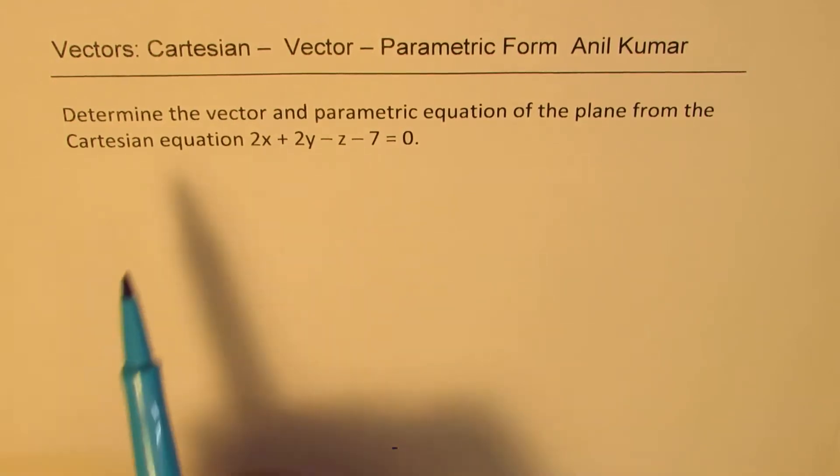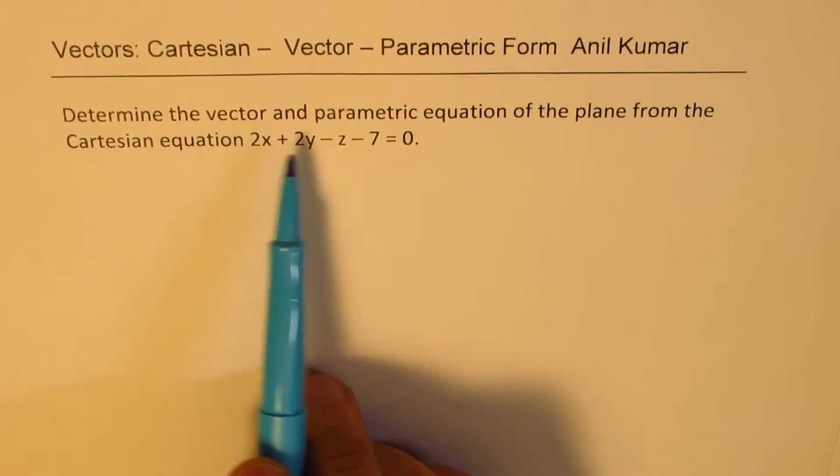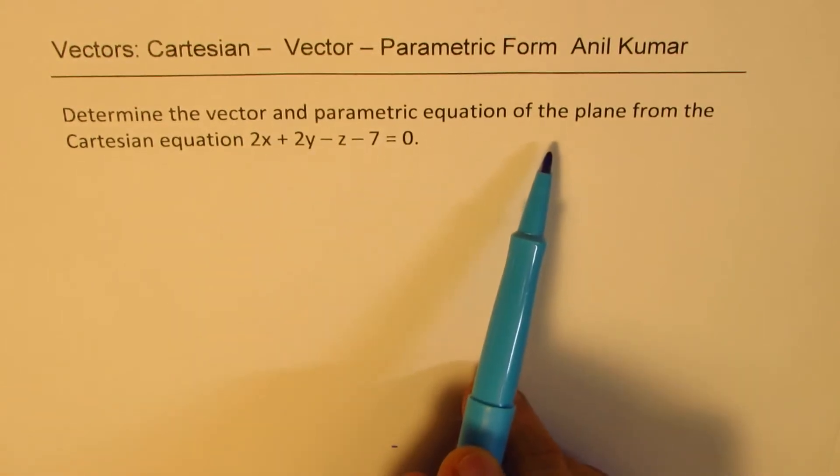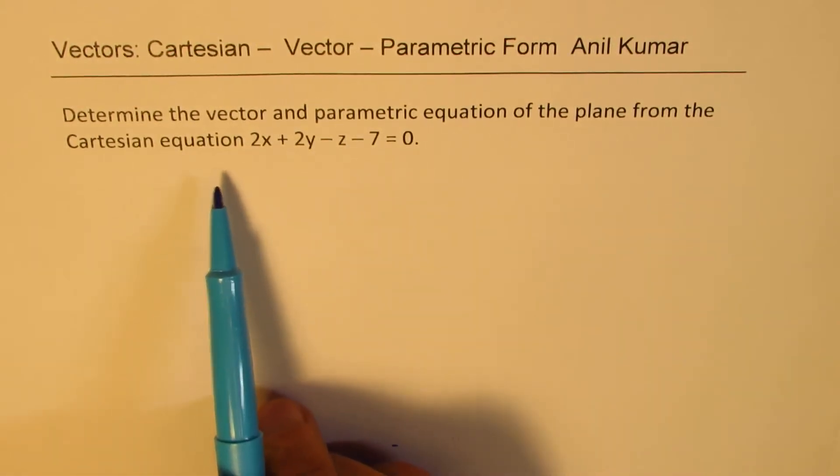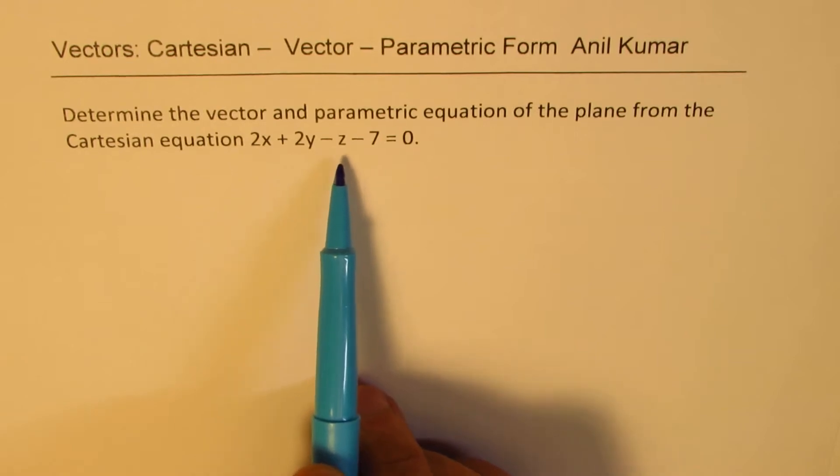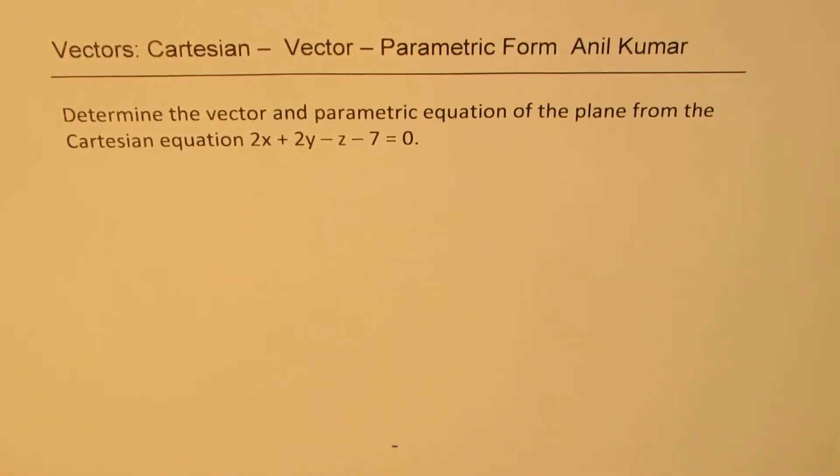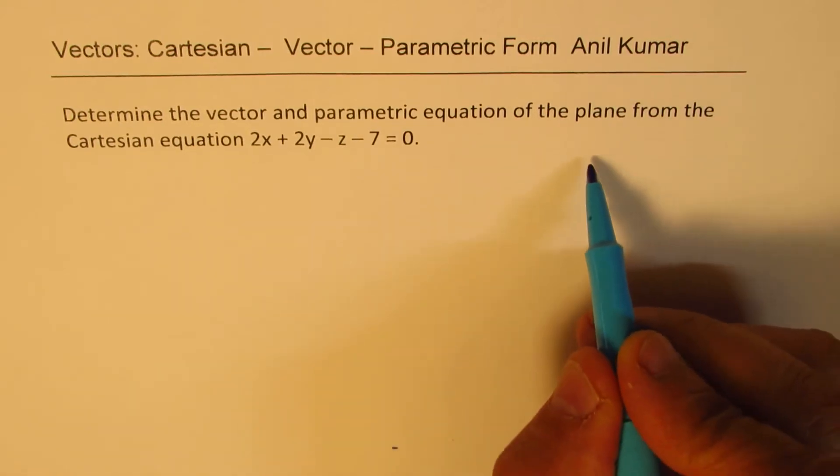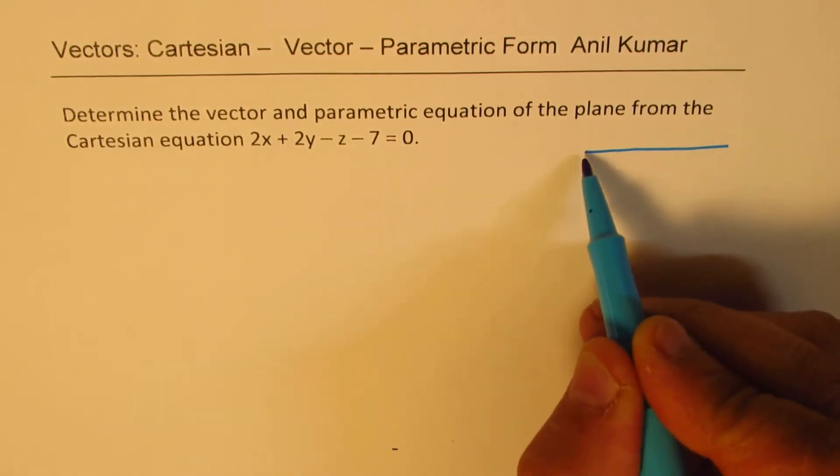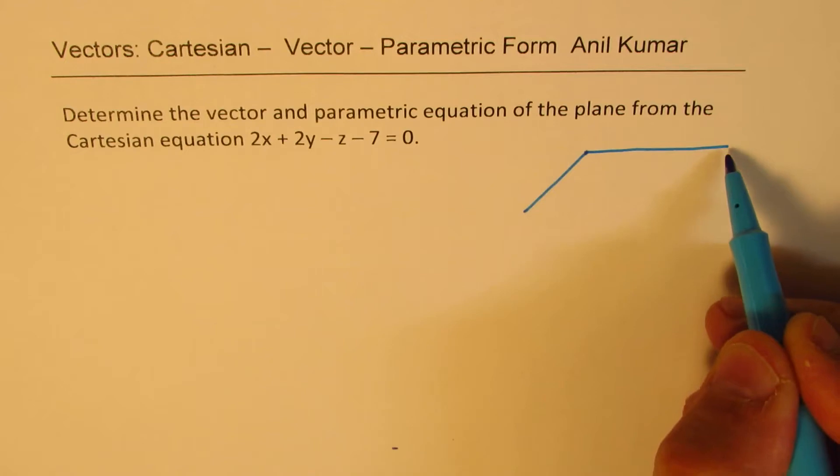The question here is, determine the vector and parametric equation of the plane from the Cartesian equation 2x plus 2y minus z minus 7 equals to 0. Now, it is very important to understand that Cartesian equation defines a plane with respect to normal.